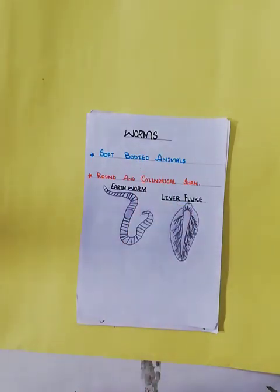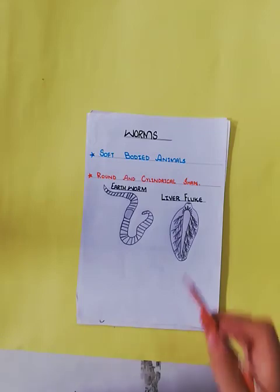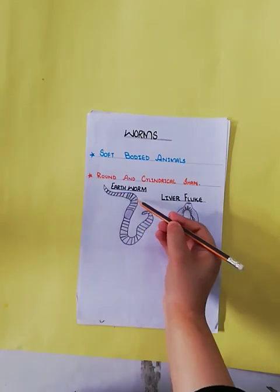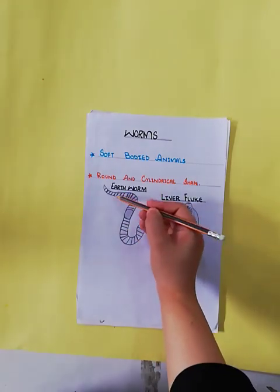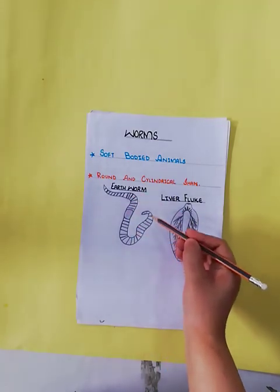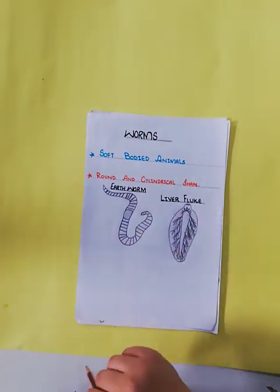Number two is Worms. Worms are soft-bodied animals and they have no legs. The body is round or cylindrical in shape. The body of some worms is segmented — meaning their body is divided into different parts. For example, earthworm and tapeworm have segmented bodies.